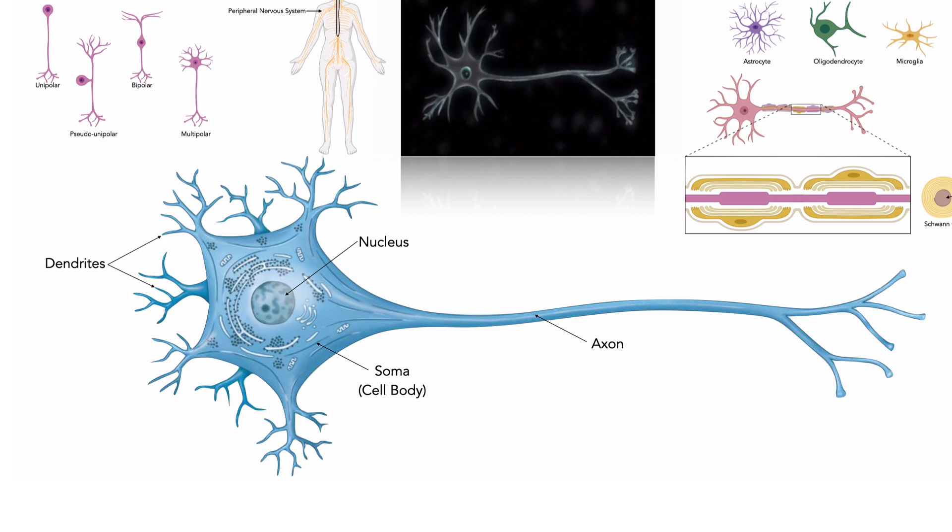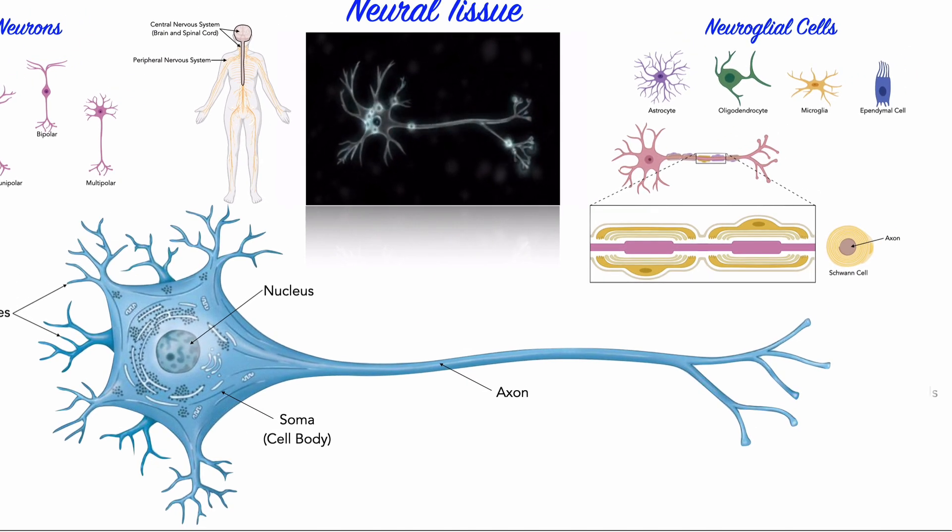Dendrites are like antennas that receive input from other neurons, while the axons are responsible for sending out information and communicating to target cells. Each axon ends at axon terminals, where the neuron typically releases chemicals called neurotransmitters, which communicate to specific target cells.